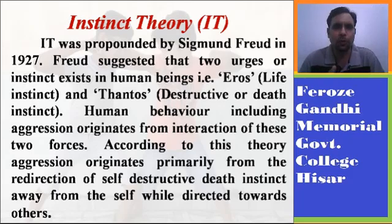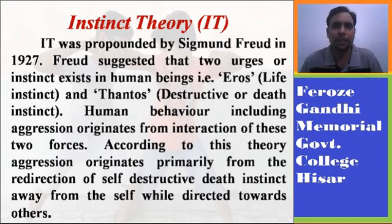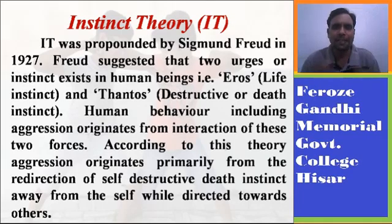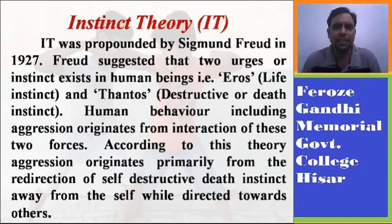Take an example of tug of war. When two teams pull the rope towards each other, there is a tension created in the rope. Similarly, when there is an interaction between Eros and Thanatos, a behavior is manifested, and that behavior is named aggression or aggressive behavior by Sigmund Freud. According to this theory, aggression originates primarily from the redirection of self-destructive death instincts away from the self and directed towards others. When Thanatos is an unrestrained and destructive force, it has a tendency to destroy the self.